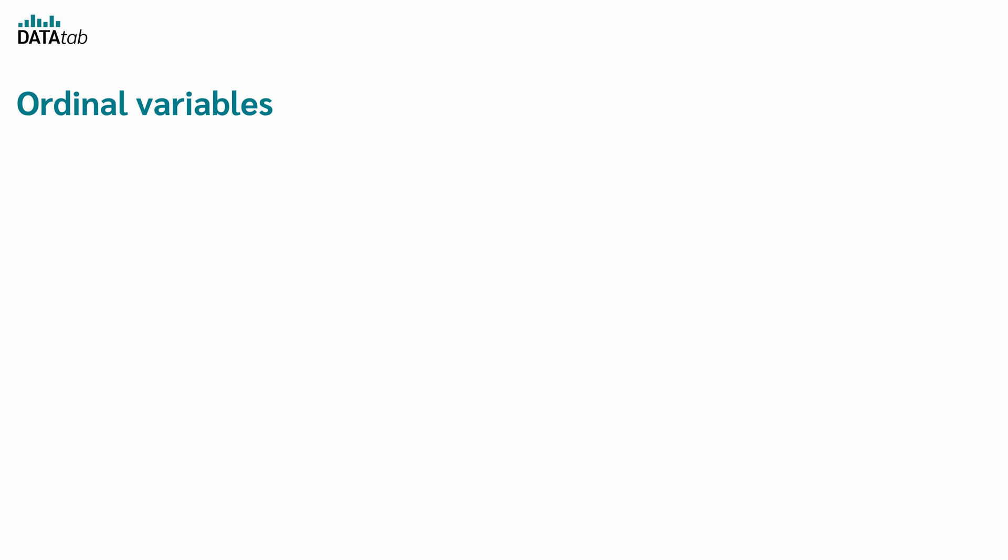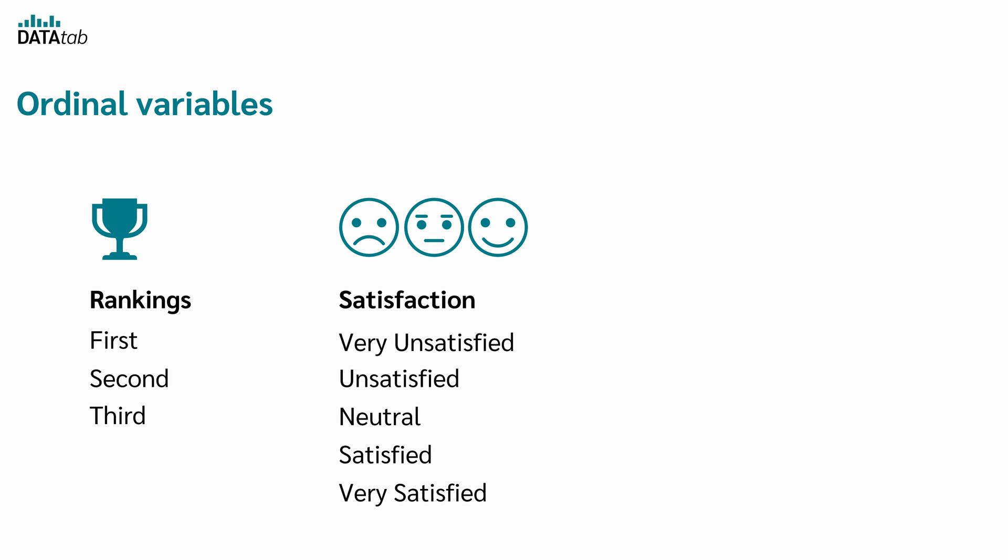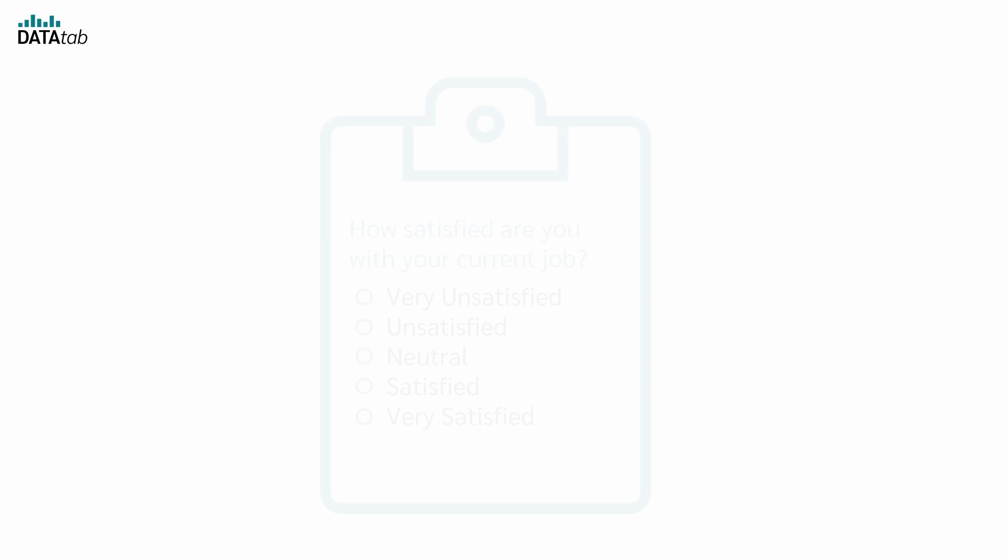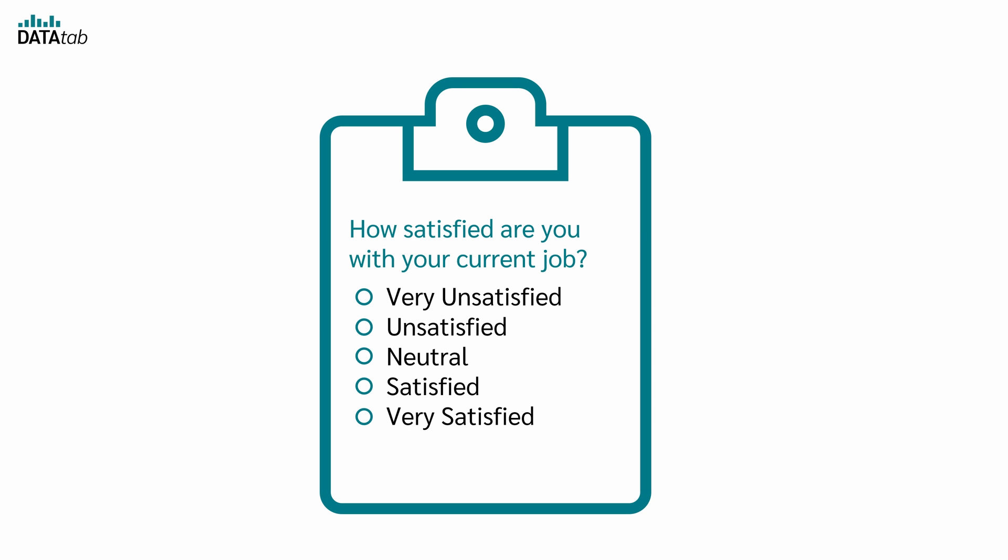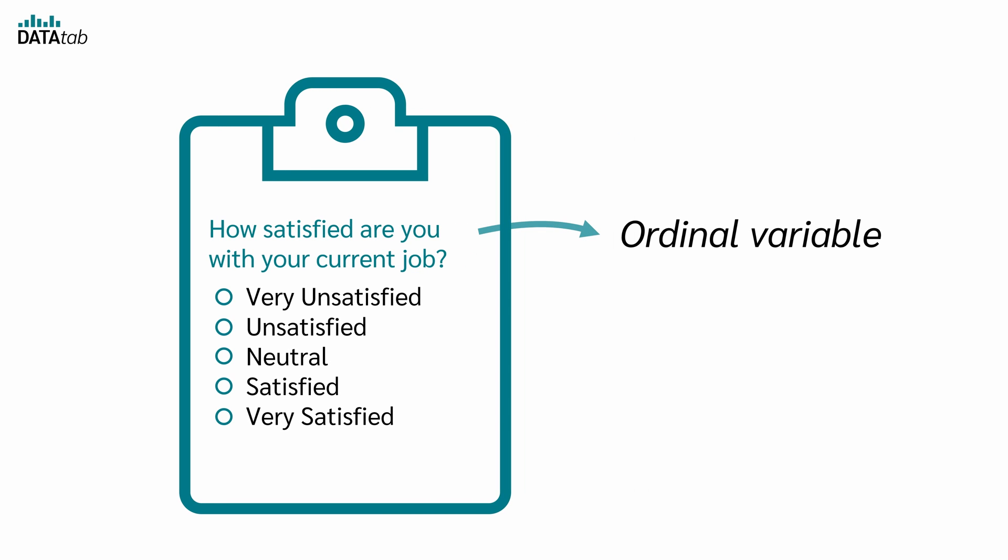Examples of Ordinal variables are all kinds of rankings like 1st, 2nd, 3rd, Satisfaction ratings – very unsatisfied, unsatisfied, neutral, satisfied, very satisfied, and levels of education – high school, bachelors, masters. In a questionnaire you could ask, how satisfied are you with your current job? In this case, we have these 5 possible options. The answers can be categorized and there is a logic order. That's why the variable Satisfaction with the job is an Ordinal variable.